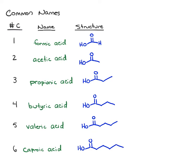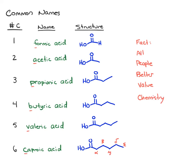We won't go beyond six carbons. For Greek letters, you need to know alpha, beta, gamma, delta, and epsilon. To help you remember the common names, use this mnemonic based on the first letter of each name: 'It is a fact that all people better value chemistry' — that gives you formic, acetic, propionic, butyric, valeric, caproic.